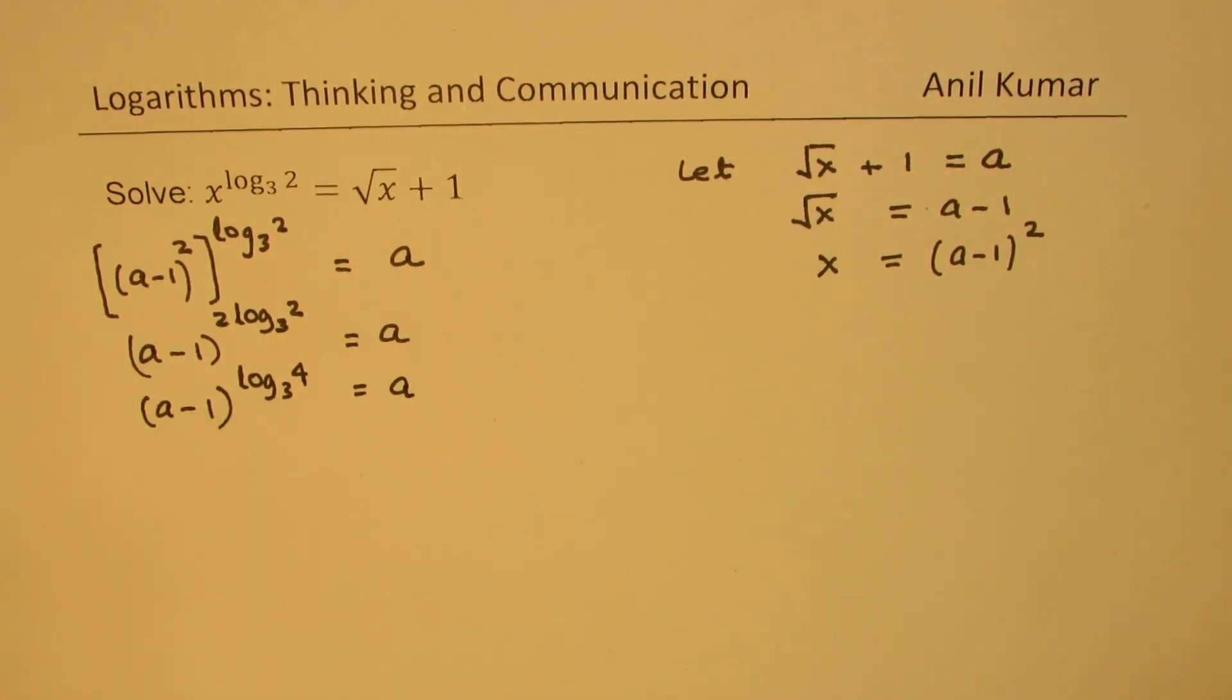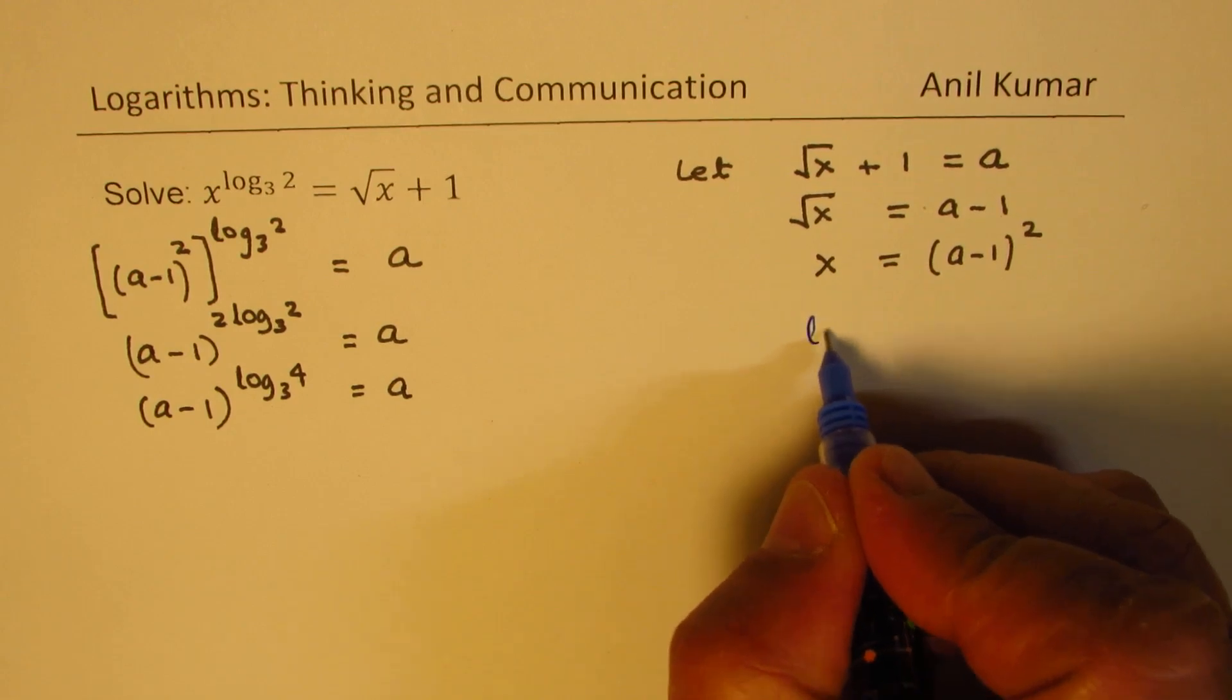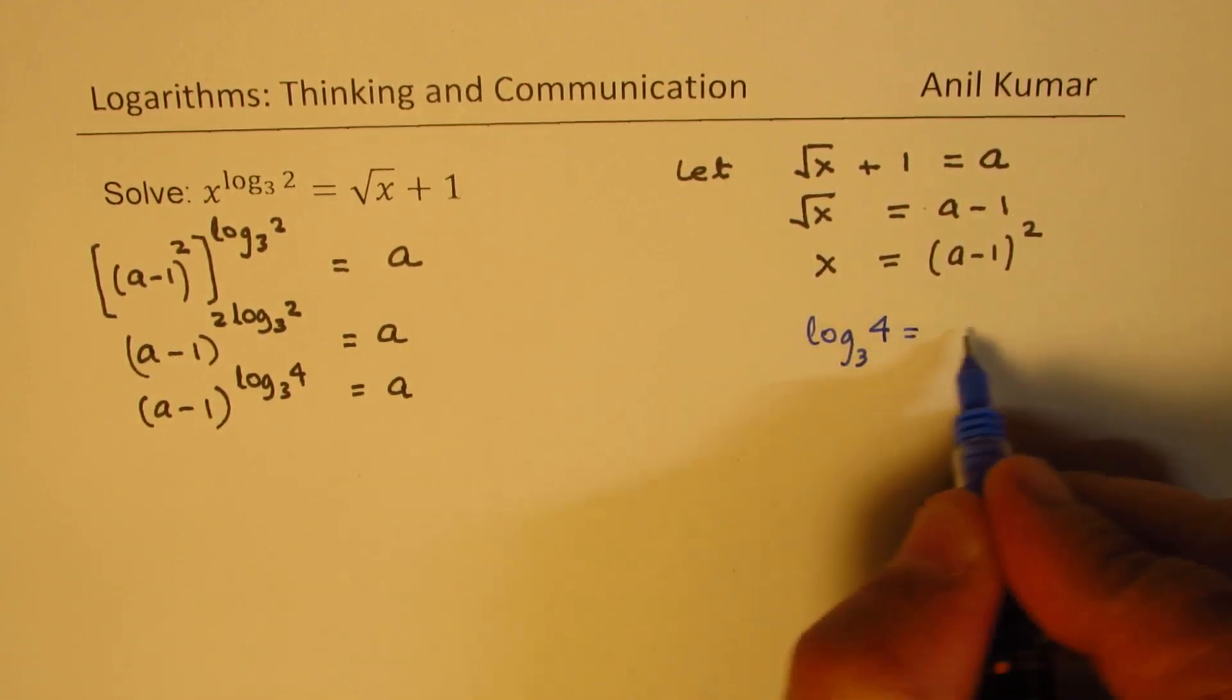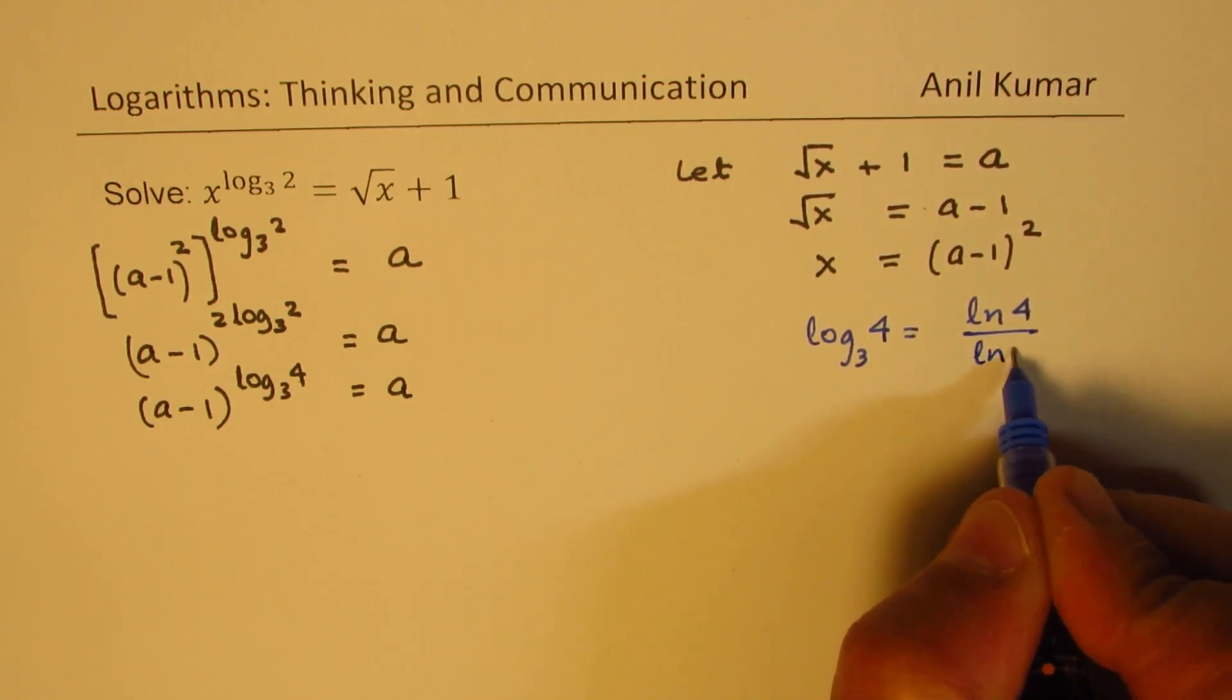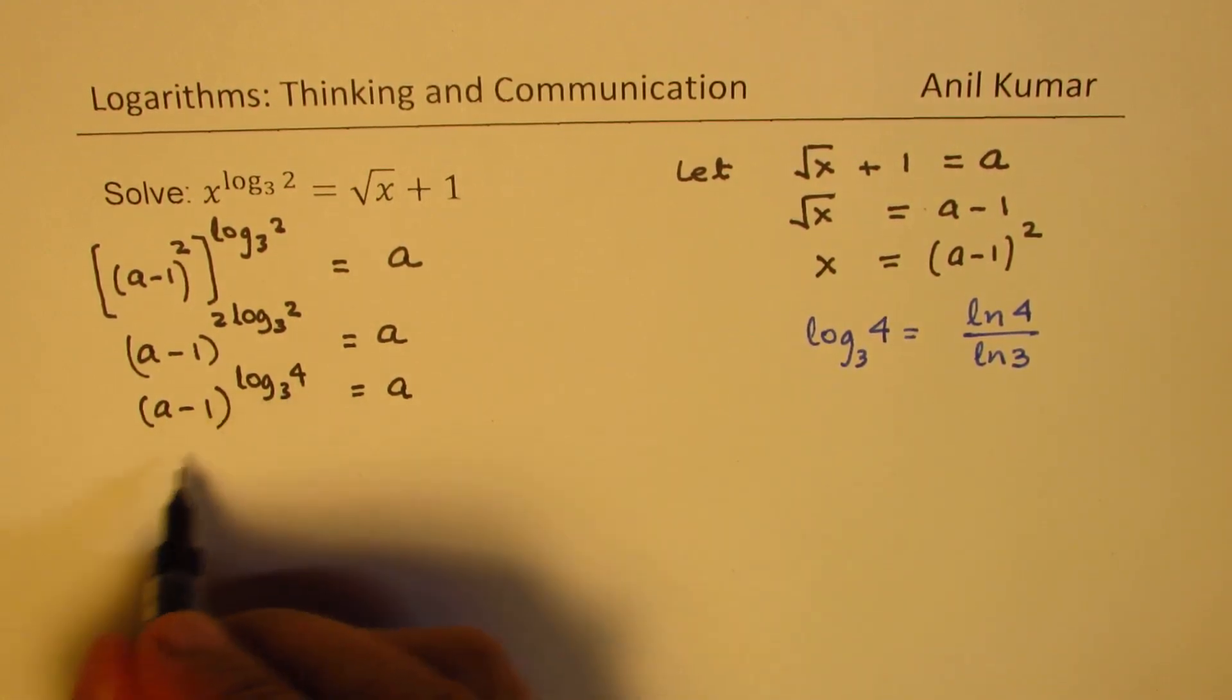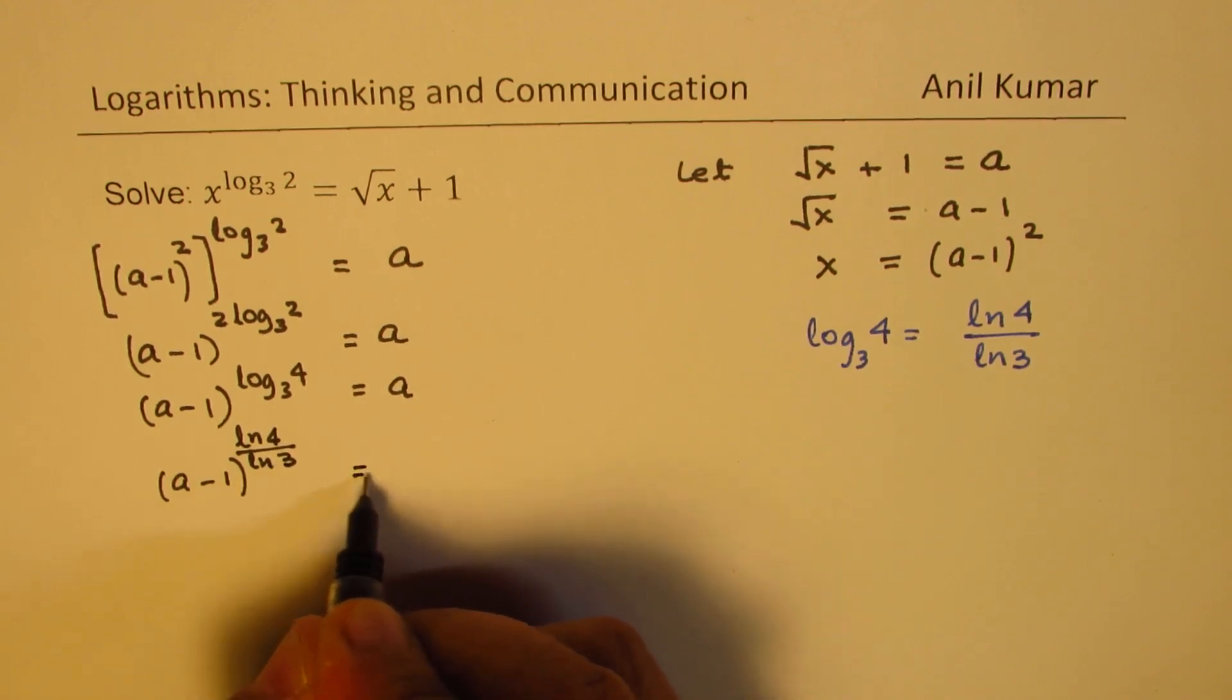Now log to the base 3 of 4 can be written—we can change the base. Log to the base 3 of 4 changing the base can be written as ln 4 over ln 3.